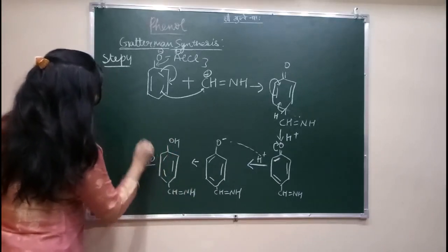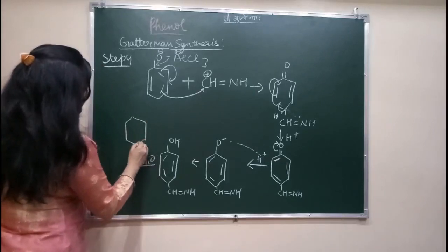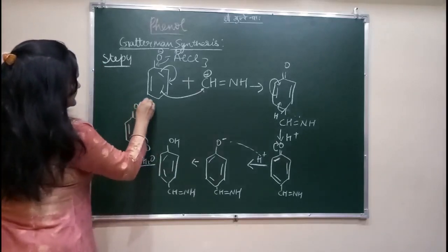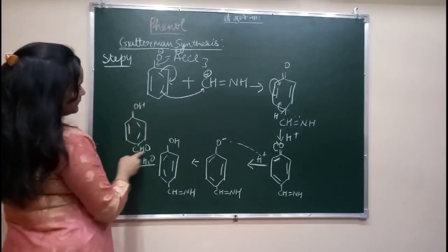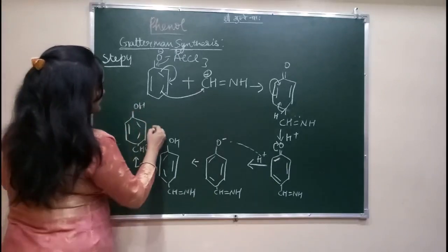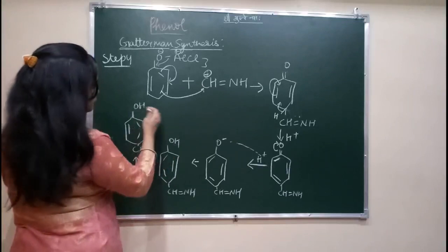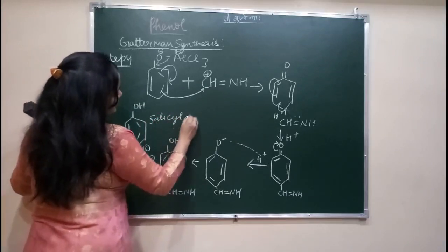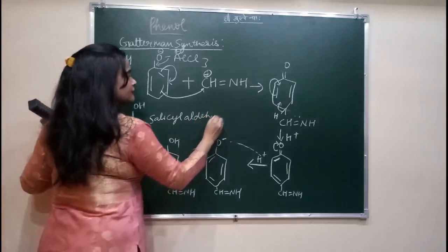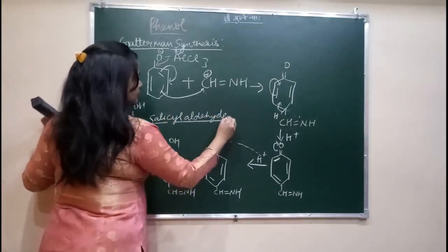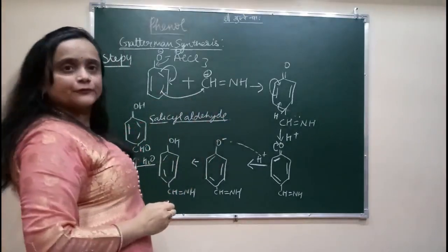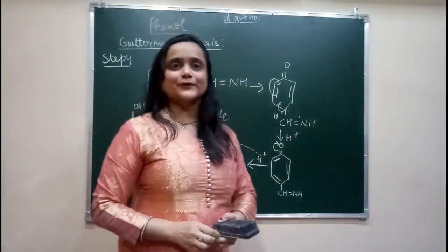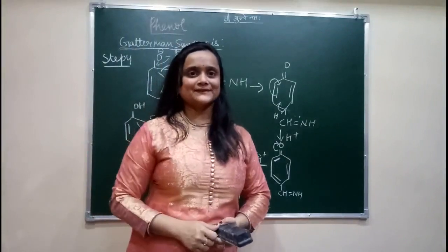On hydrolysis, what we get is CHO — salicylaldehyde. This is the final product. This mechanism has a series of steps and we have done all the steps. That's all for today. We will meet in the next video. Thank you, bye, have a good day.